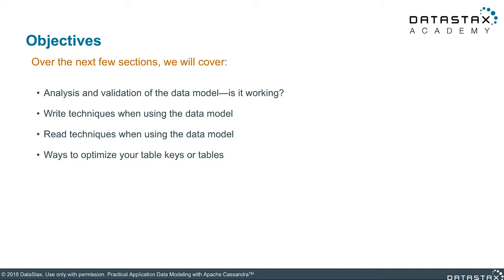We'll be going over and analyzing multiple things that will help to keep the data model from blowing up in our faces later. If there are any issues, we can adjust them using some techniques that we'll look at a bit later. This includes techniques to optimize the data model for write workloads and read workloads. We'll examine some techniques to optimize your table keys and columns to ensure that data is distributed as evenly as possible and avoids hot spotting on nodes or in large partitions.